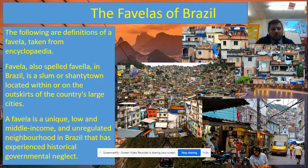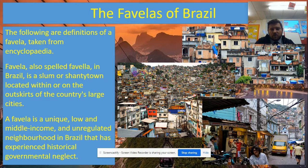A favela is a unique low and middle income, unregulated neighbourhood in Brazil that has experienced historical governmental neglect. These are where the poorest people of Brazil live. They've not been looked after by the government, so they don't get necessarily the provisions they need. We have running water to all our houses, gas and electricity — this may well not be the case in some of those houses in the favelas. These people are not being looked after properly and have just had to build their own houses on the outskirts of the city.